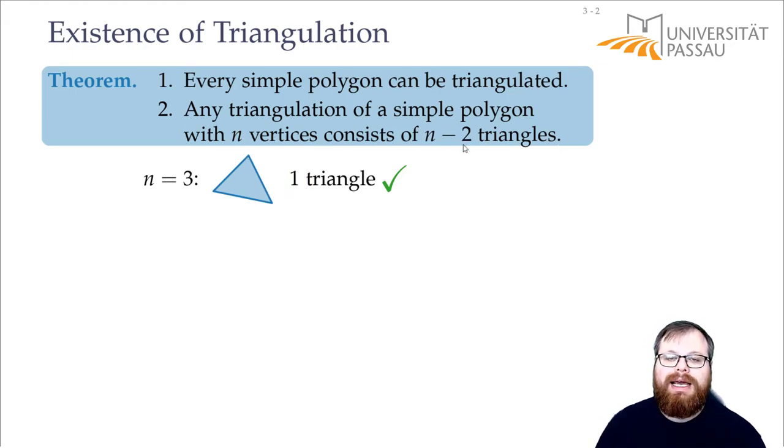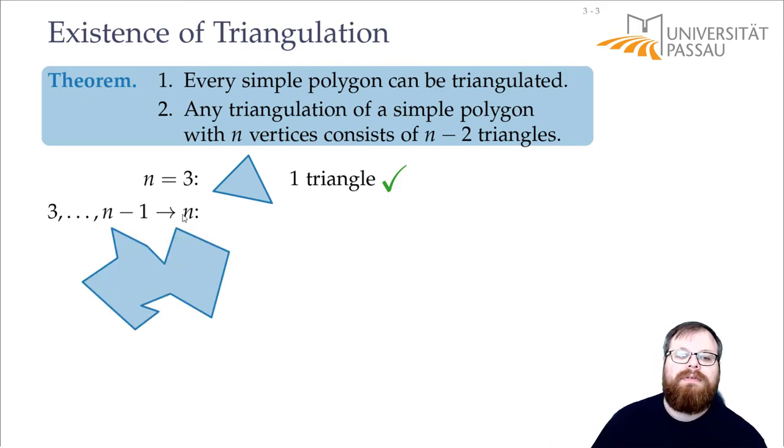So we can get exactly n minus two triangles. Now assume that we've shown the theorem for all polygons that have up to n minus one vertices. Then we want to show it for all the polygons that have exactly n vertices. To do that, we pick one convex corner v. That's a corner where the internal angle is less than 180 degrees. Such a corner always exists. You can verify that easily with a polygon formula that the sum of the angles is 180 times n minus two. And now we take its neighbors on the boundary of the polygon. So we get the neighbor w and the neighbor u. And we want to connect these.